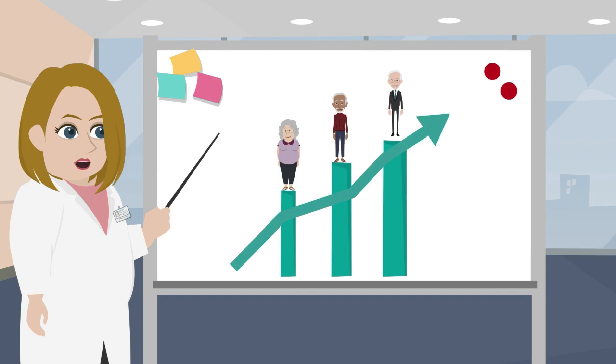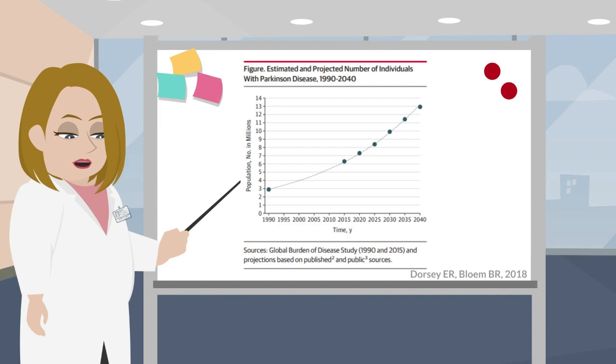In another study, the authors made projections based on the population and observed that, in a conservative view, the number of people with PD in the world can double, reaching 14.2 million people.